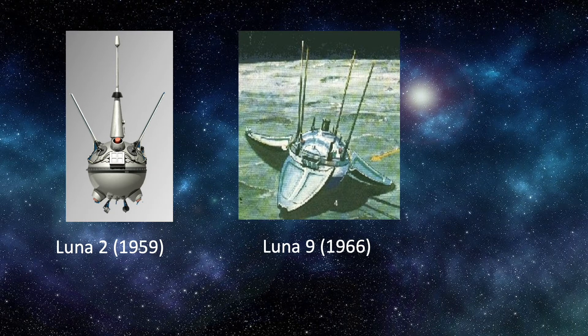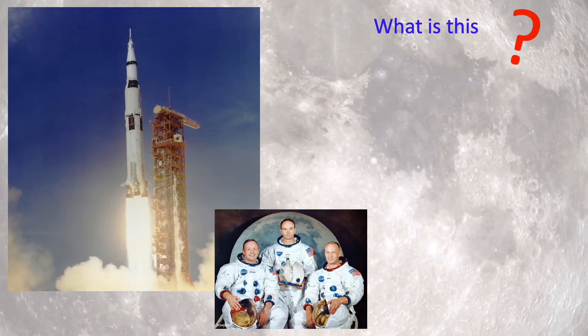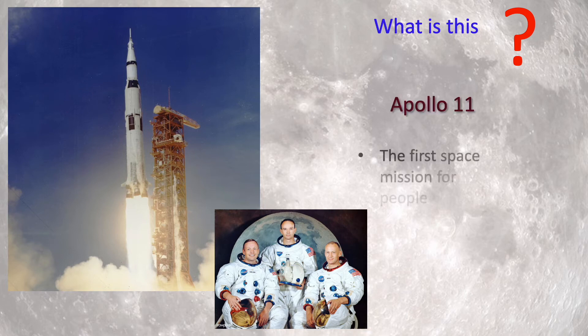The moon was first reached by a human-made object in September 1959, when the Soviet Union's Luna 2 — an uncrewed spacecraft — was intentionally crashed onto the lunar surface. The first successful soft landing on the moon was by Luna 9 in 1966.